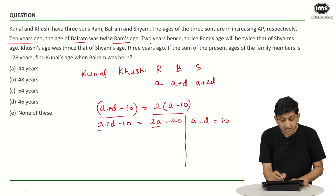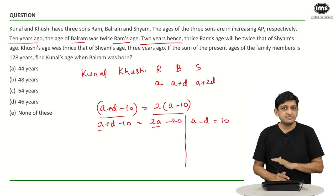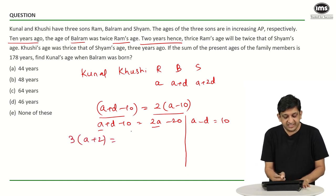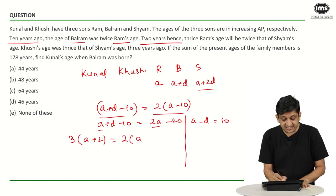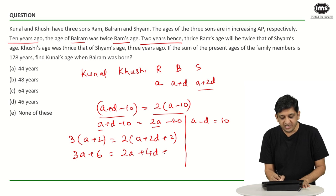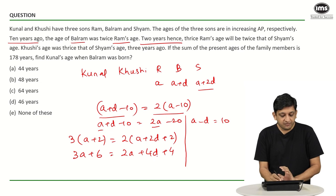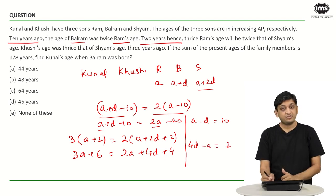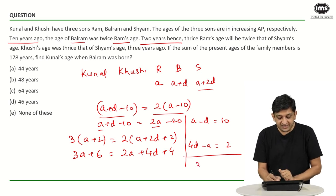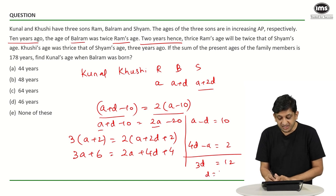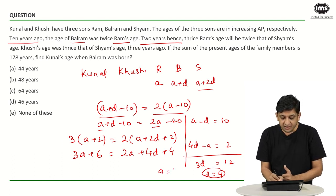Adding the two equations: the A terms cancel, giving 4D minus D equals 3D equals 12, so D equals 4. Substituting D equals 4 into the first equation gives A equals 14. Therefore Ram's age is 14, Balram's age is 14 plus 4 equals 18, and Shyam's age is 18 plus 4 equals 22 years. Those are the present ages of the three sons.